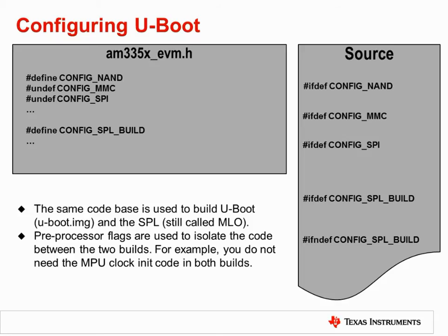Recall that the first step of board porting is to modify the configuration file. The configuration file contains a number of preprocessor definitions which control the inclusion or exclusion of various functionality. Within the uBoot source code, these preprocessor switches are used to specify which C functions will be built into the executable. For instance, if the config NAND preprocessor switch is defined, support for NAND flash will be built into the image. The config SPL build switch determines whether both an SPL and uBoot will be built, if defined, or just uBoot, if undefined. If uBoot is small enough to fit in internal memory, or if you are booting from NAND flash which is execute-in-place, this may be left undefined.